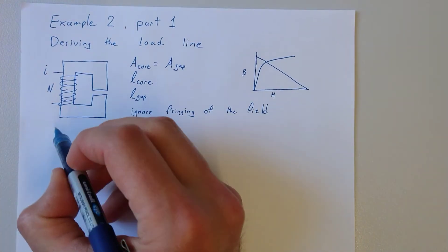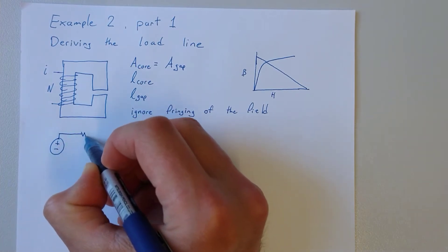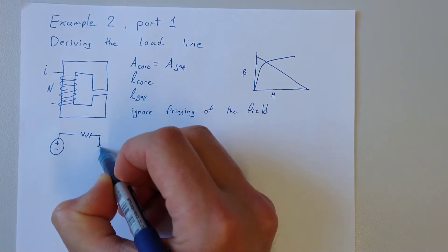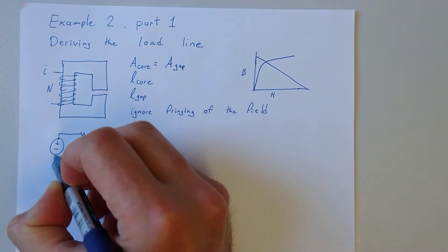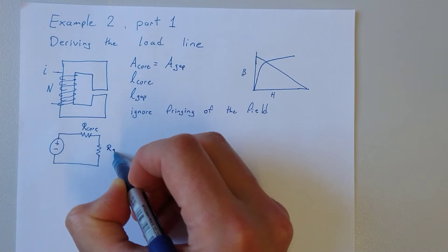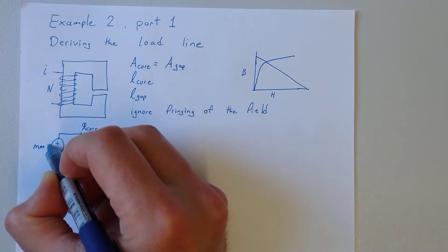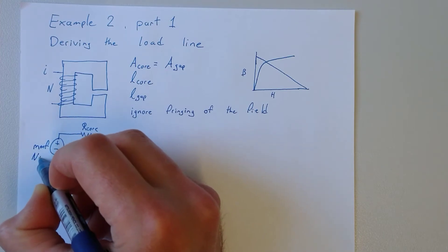This starts with an equivalent circuit. Looks something like this. There are two reluctances: a reluctance of the core and the reluctance of the gap. The driving force here is the magnetomotive force or Ni.